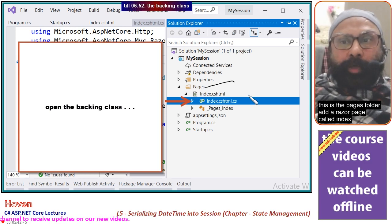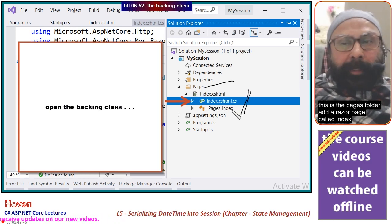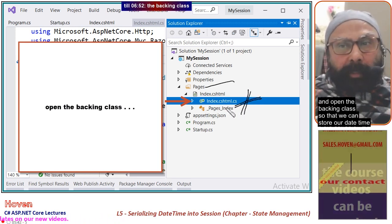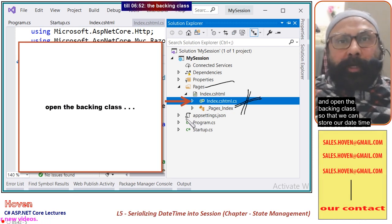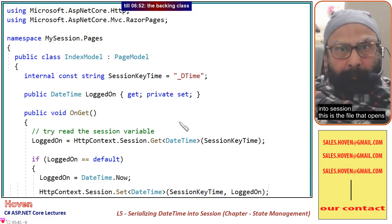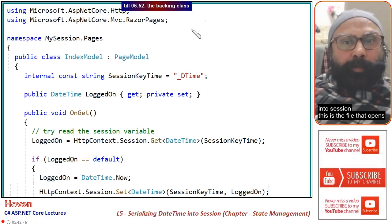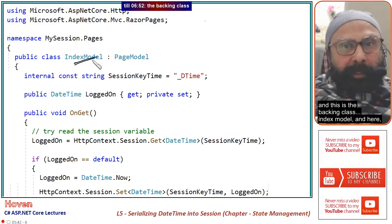This is the pages folder, add a Razor page called Index and open the backing class so that we can store our DateTime into session. This is the file that opens. And this is the backing class IndexModel.